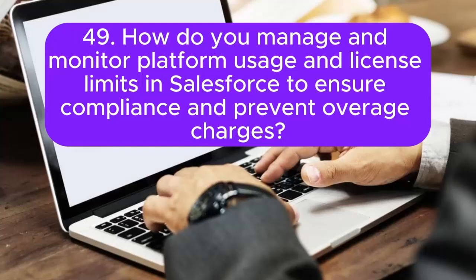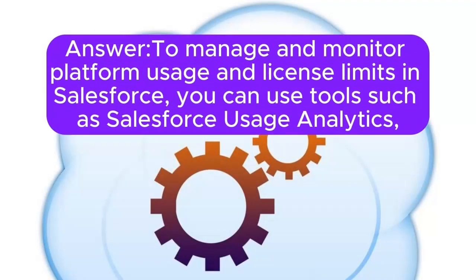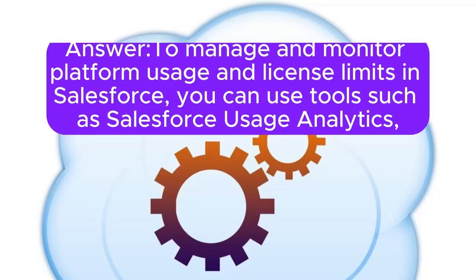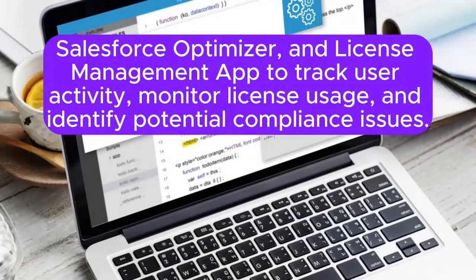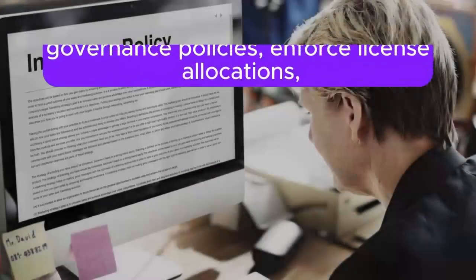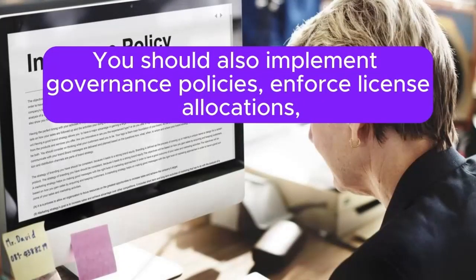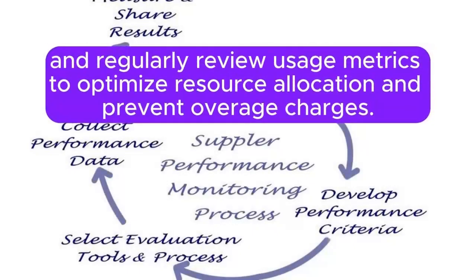Question 49: How do you manage and monitor platform usage and license limits in Salesforce to ensure compliance and prevent overage charges? Answer: To manage and monitor platform usage and license limits, you can use tools such as Salesforce Usage Analytics, Salesforce Optimizer, and License Management App to track user activity, monitor license usage, and identify potential compliance issues. You should also implement governance policies, enforce license allocations, and regularly review usage metrics to optimize resource allocation and prevent overage charges.